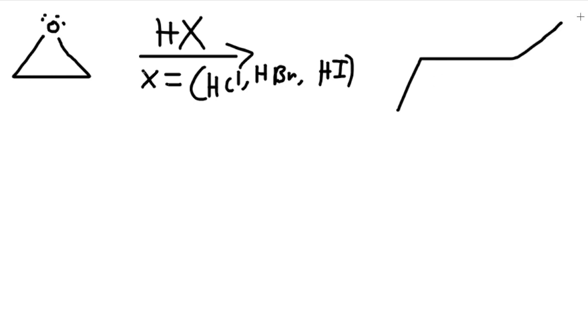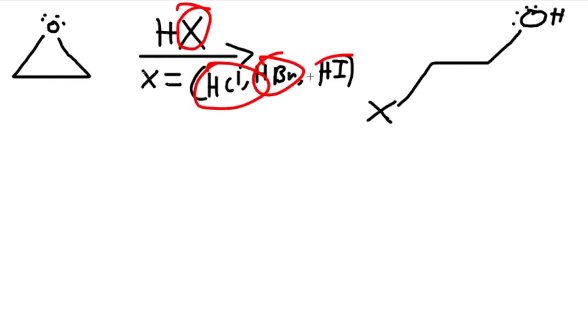In this case, we would put OH and X. It doesn't matter where we put the halogen because the carbon here is all equal. So there's no least or most amount of substituents. They're all the same in this case.